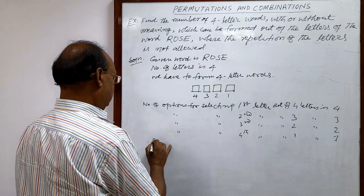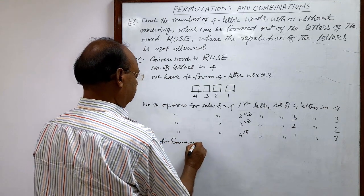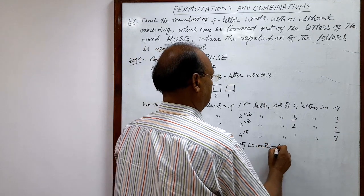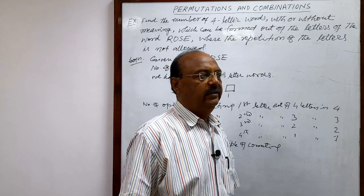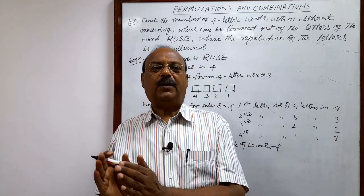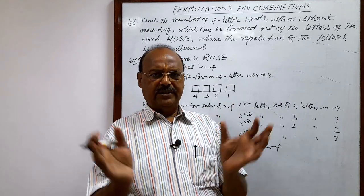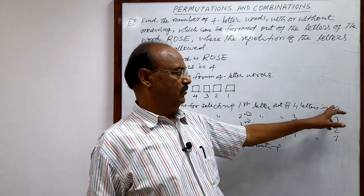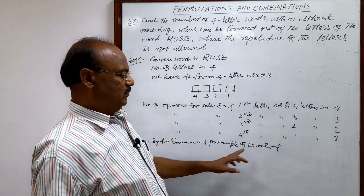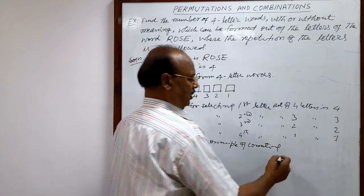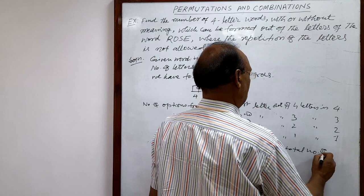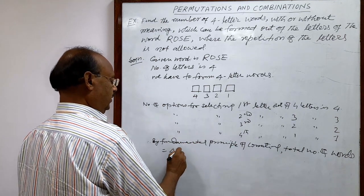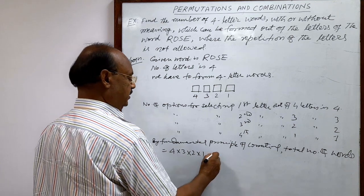So the total number of ways of forming such words can be found by multiplying these numbers using the fundamental principle of counting. The fundamental principle of counting states that if one part of a job is done in m ways and another part in n ways, then the entire job can be done in m × n ways. Therefore, total number of words = 4 × 3 × 2 × 1, which equals 24.